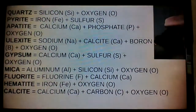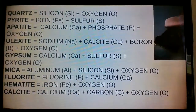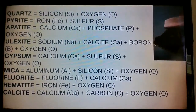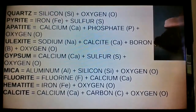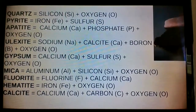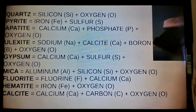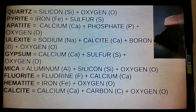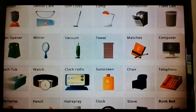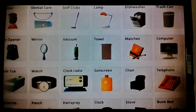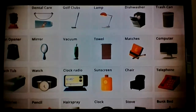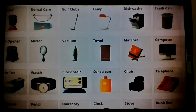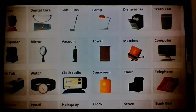And fifth, a mineral has a definite chemical composition, which means minerals always contain the same elements. Minerals found in the earth's crust include salt, coal, iron, and diamonds, just to name a few.